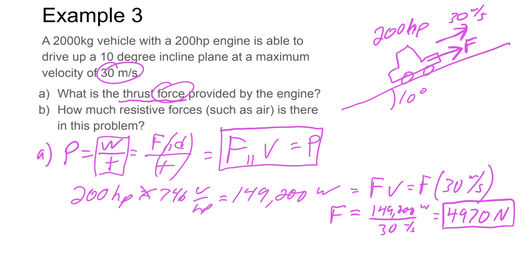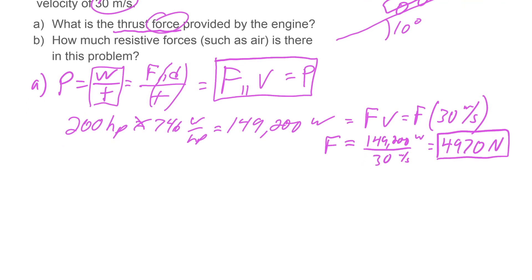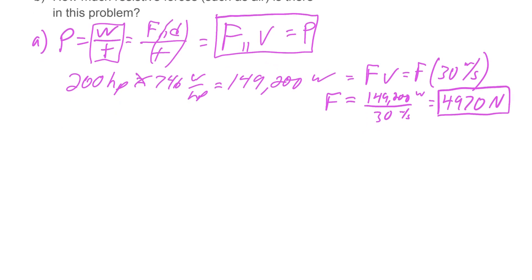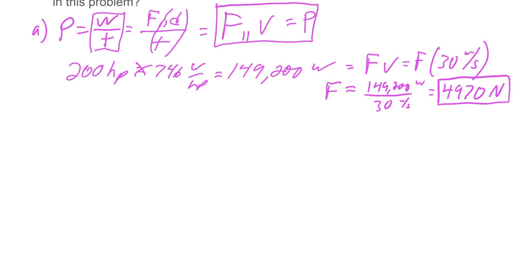Question B: we're looking at how much resistance there is. Air resistance would be the most common one, but it could also be rolling resistance. We want to know how much there is. For this one, this is mostly a review problem. We'll take, let me redraw this here. Remember our car is going up this hill and we just determined the thrust force of the car.